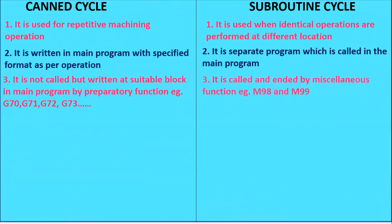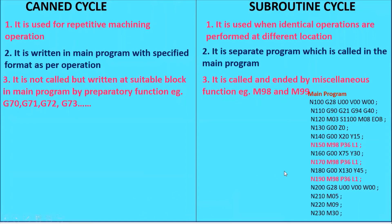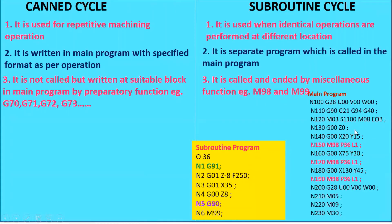In subroutine, it is called and ended by a miscellaneous function — M98 and M99. We call the subroutine program using M98, where M stands for miscellaneous functions and 98 is the suffix. M98 instructs the controller to jump to the subroutine program — in simple words, you call the subroutine program in the main program. M99 is written at the end of the subroutine program to indicate that the program is ended. So we use M99 — the miscellaneous function — to end the subroutine.